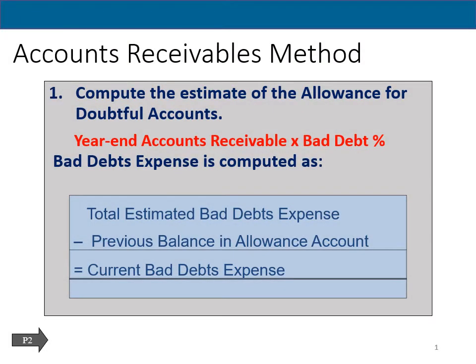Let's shift our focus to accounts receivable focused methods of estimating bad debt expense. We'll start with the receivables method — the percentage of receivables. You just take year-end accounts receivable in total and multiply it by your bad debt percentage.